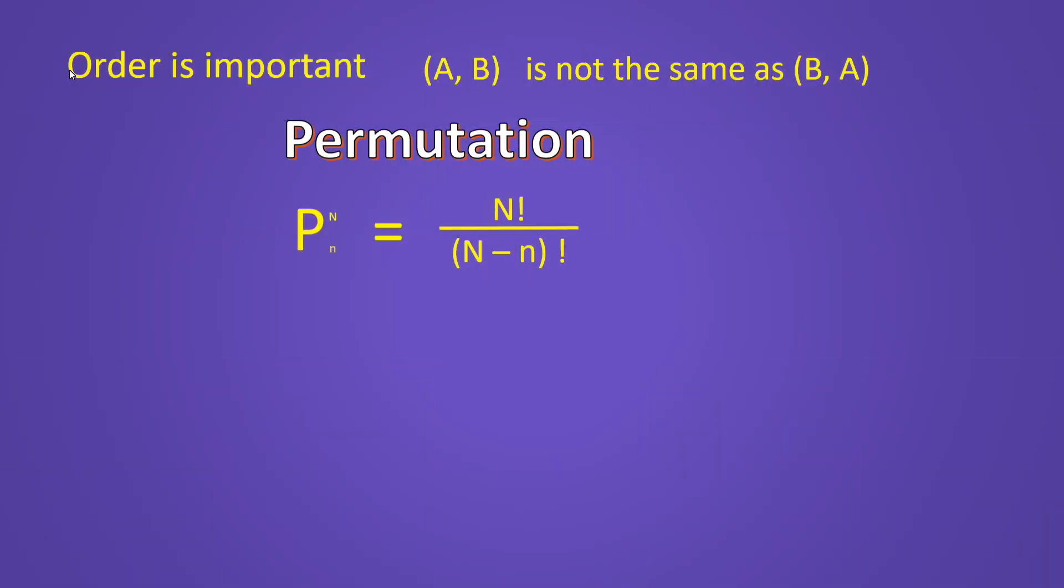So what about permutations? When we use the permutation formula, then the order in which we select items matters. So picking A and then B is not the same as picking B and then A. Here you can see the formula for permutation.